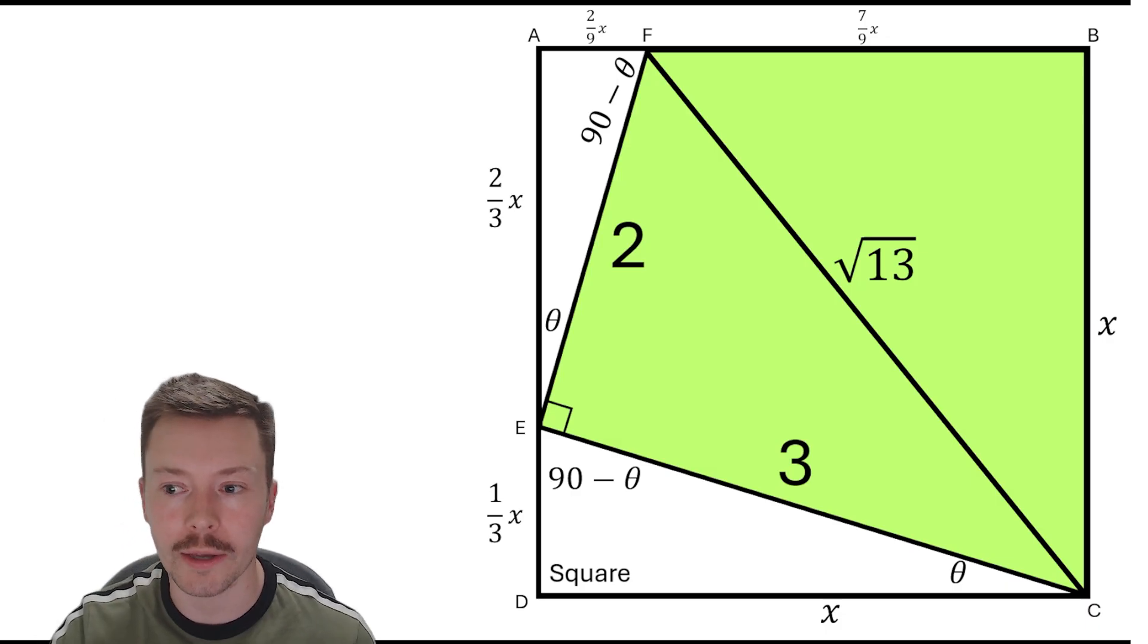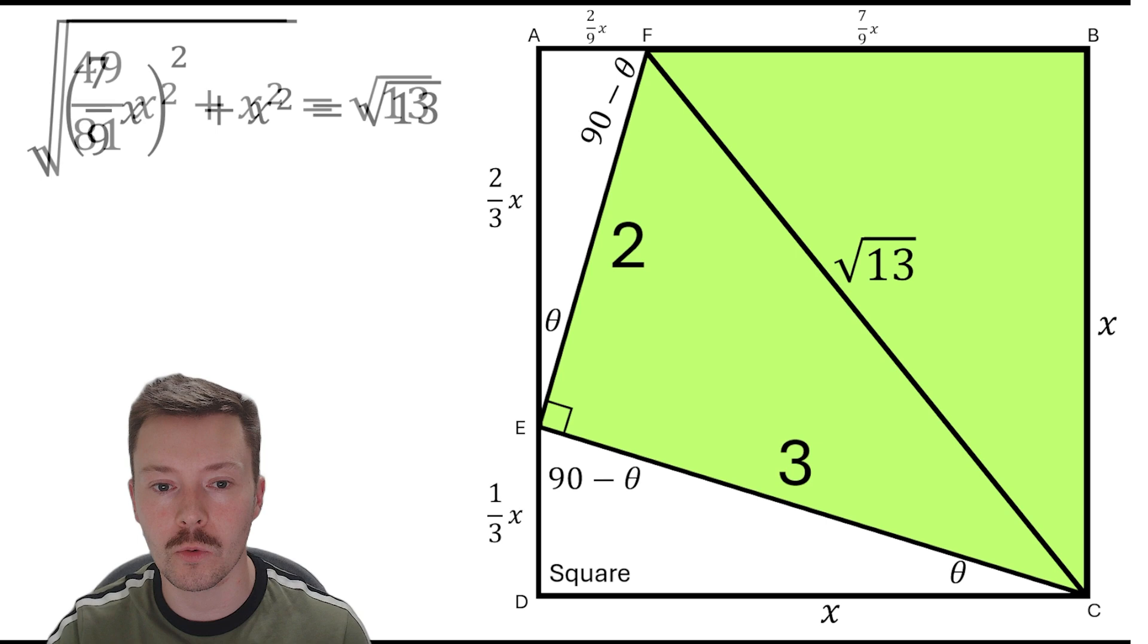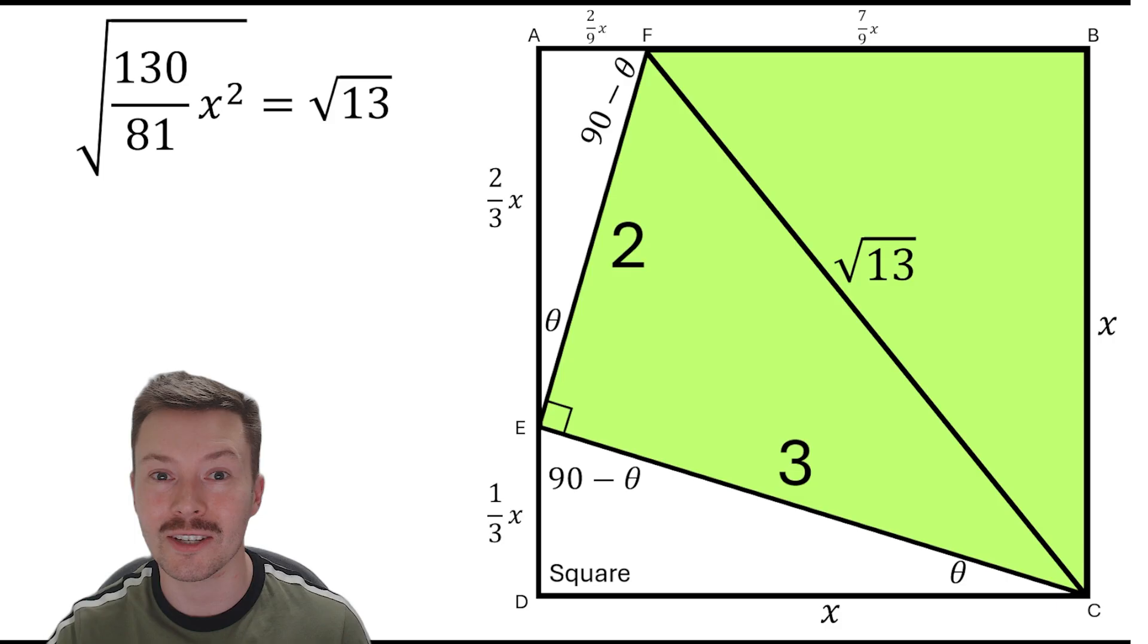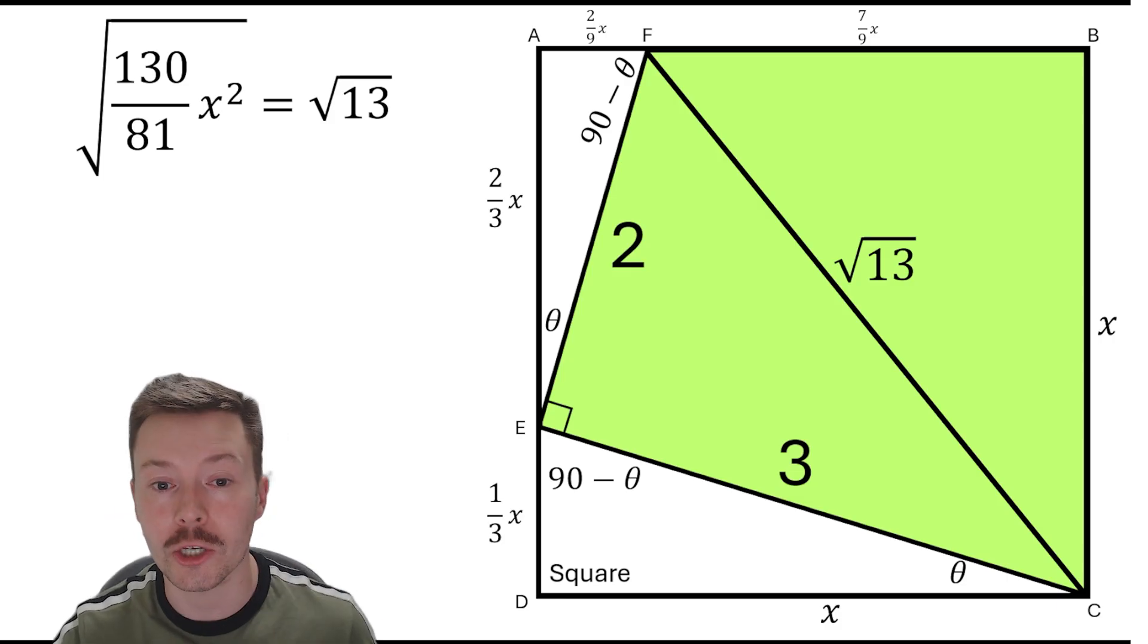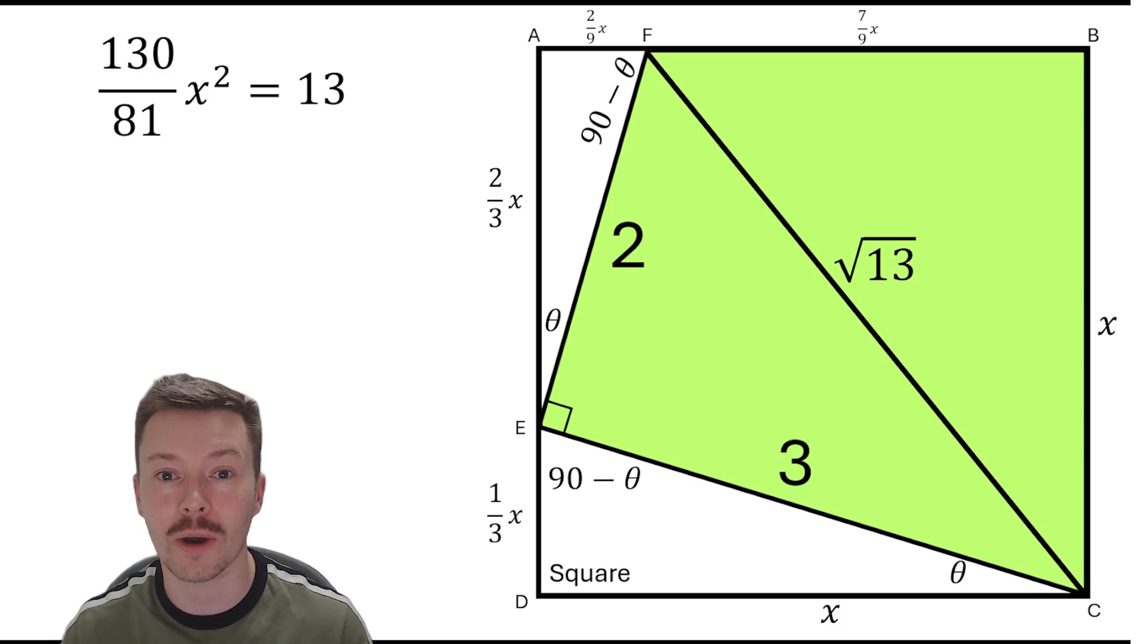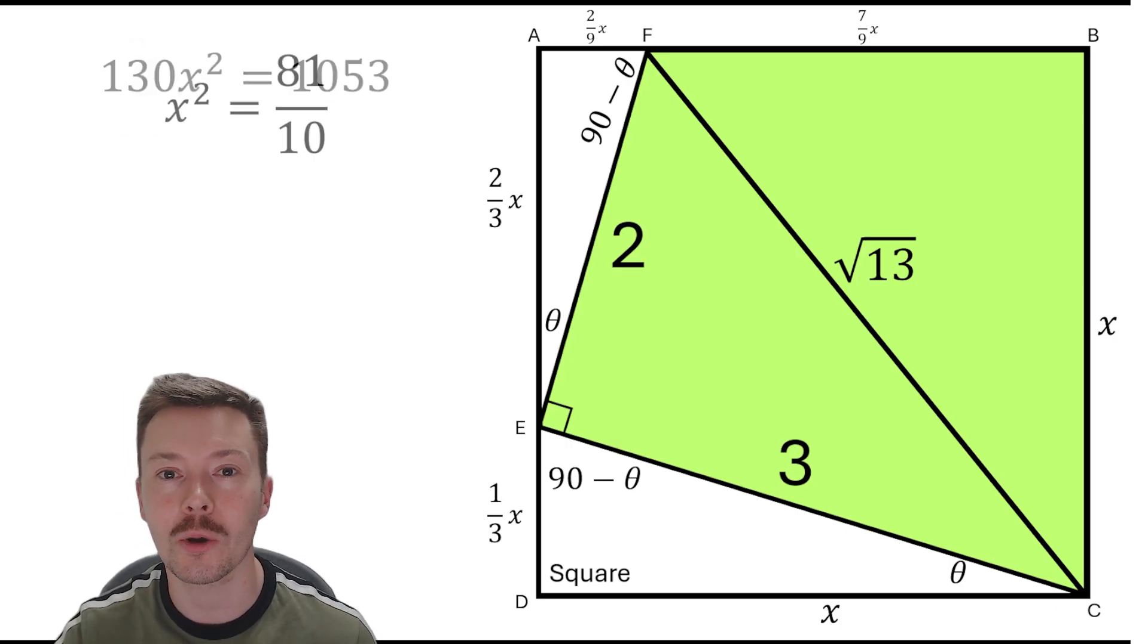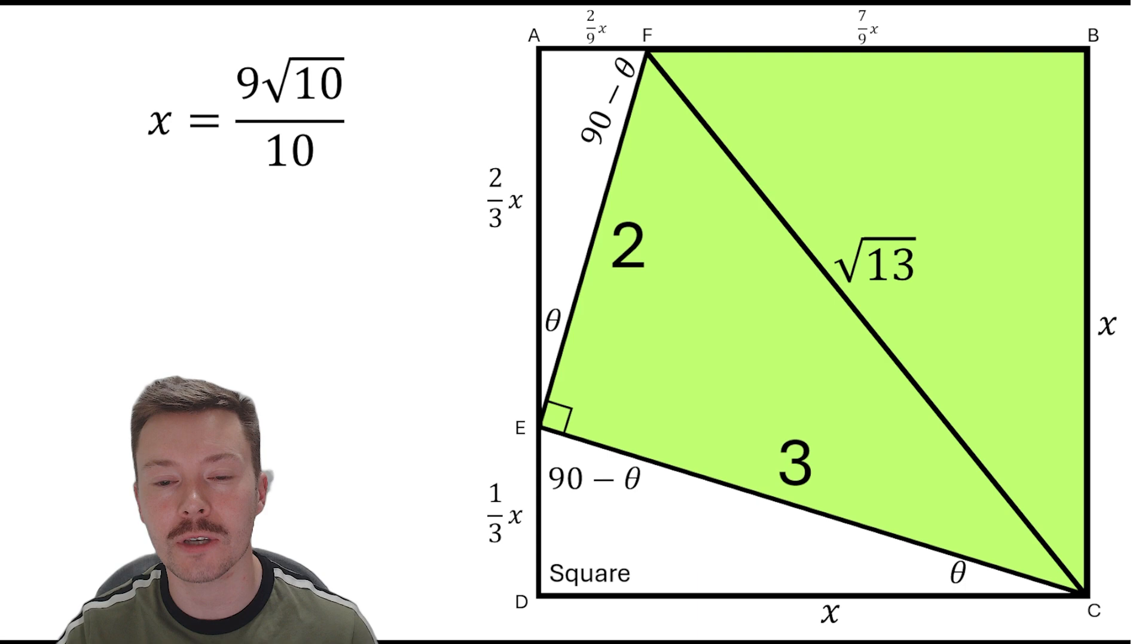Now I'm going to look at triangle FBC, and I know because it's a right angle triangle again that seven ninths x squared plus x squared, square rooted, is equal to root 13 by Pythagoras. Okay, so seven ninths x squared is 49 over 81 x squared, add an x squared is 130 over 81 x squared. Square both sides of that equation and we're going to get 130 over 81 x squared is equal to 13. Times both sides by 81 and it's equal to 1053. Divide by 130, we get x squared is 81 over 10. Square rooting both sides, we get x is 9 root 10 over 10.